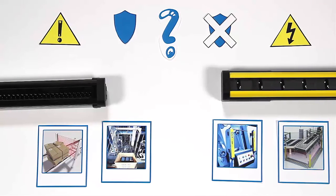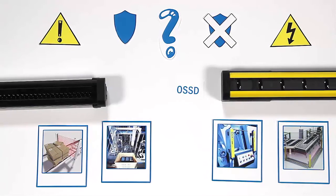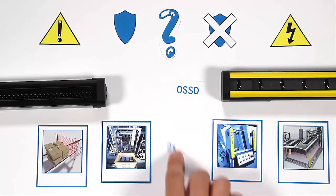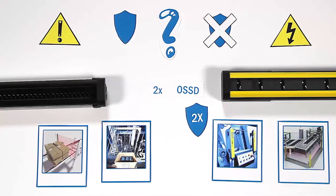Therefore, AOPDs run permanent self-tests to check the status of the output signal switching device, which is responsible for a machine stop. If one OSSD fails, there is a second one to initiate a stop. This redundant design creates a safe solution.